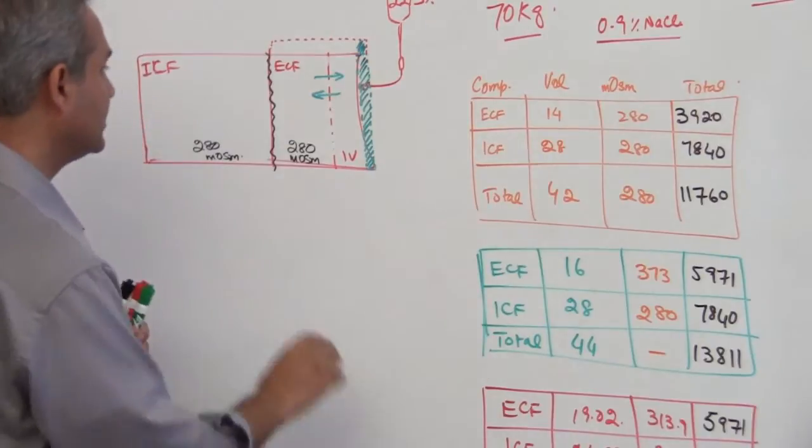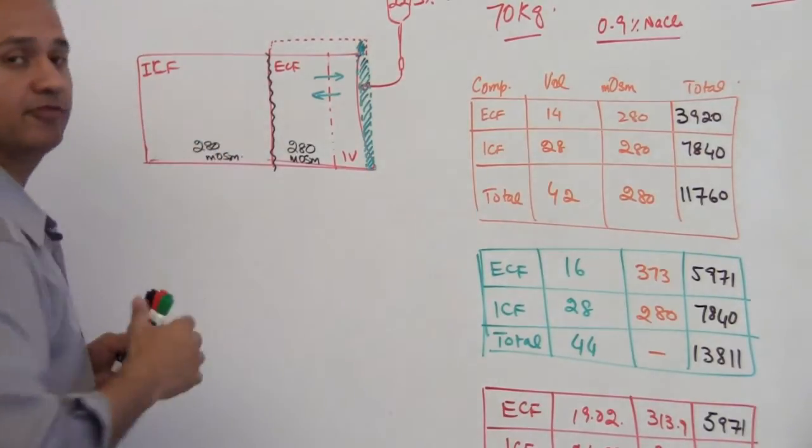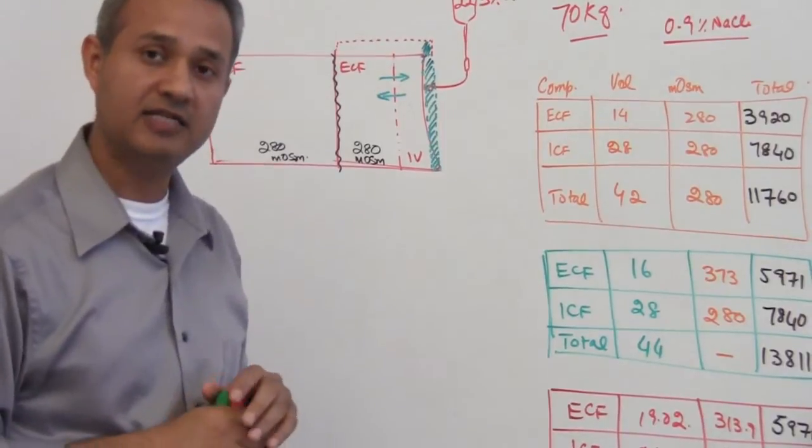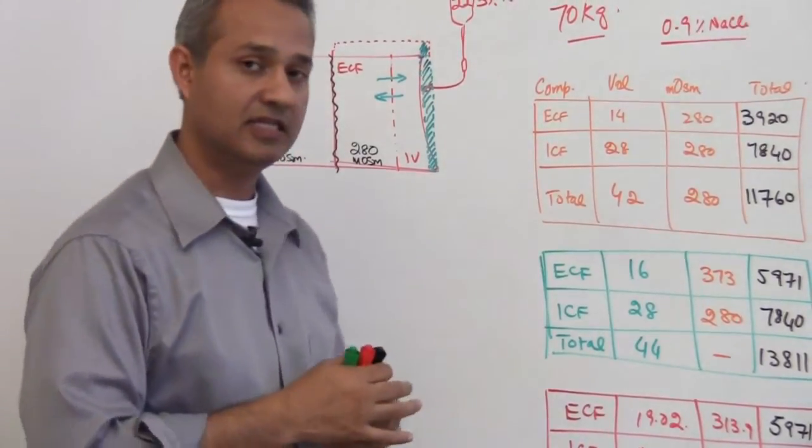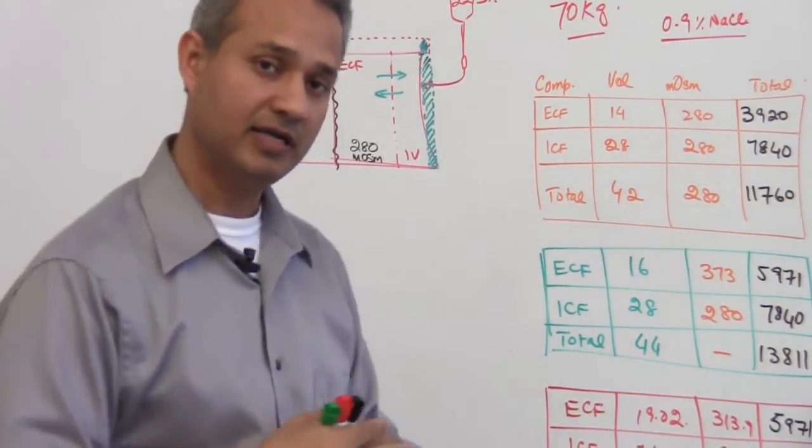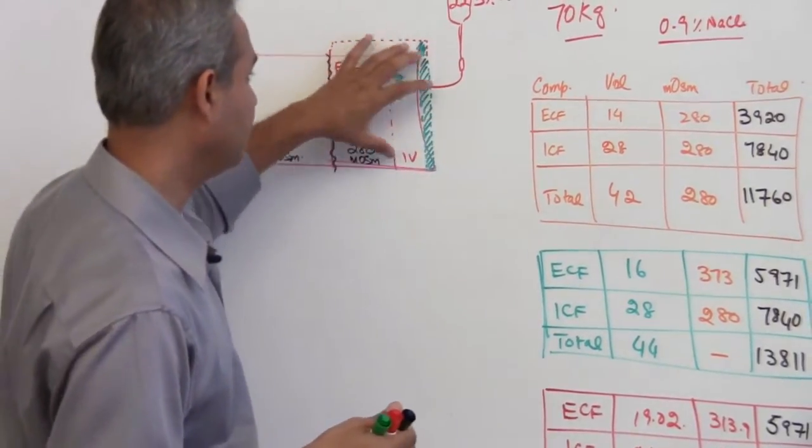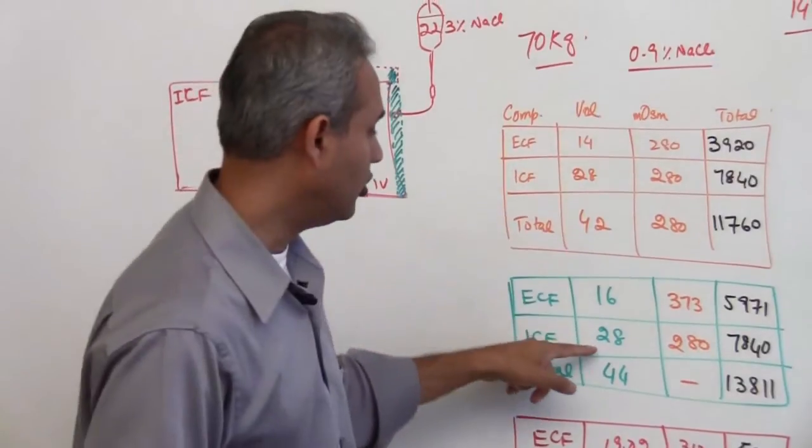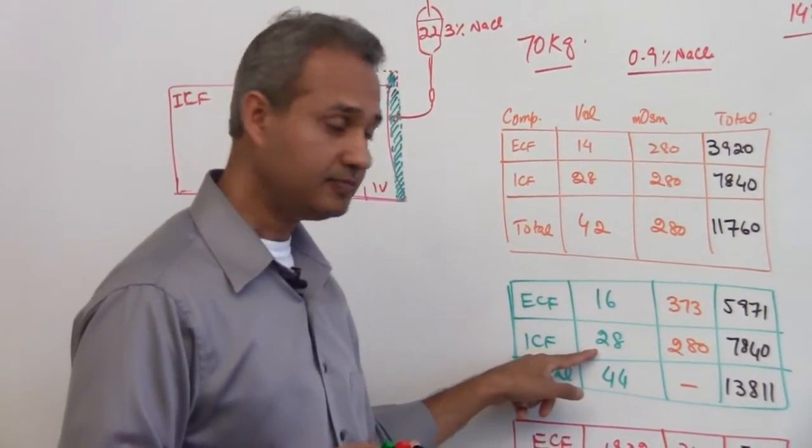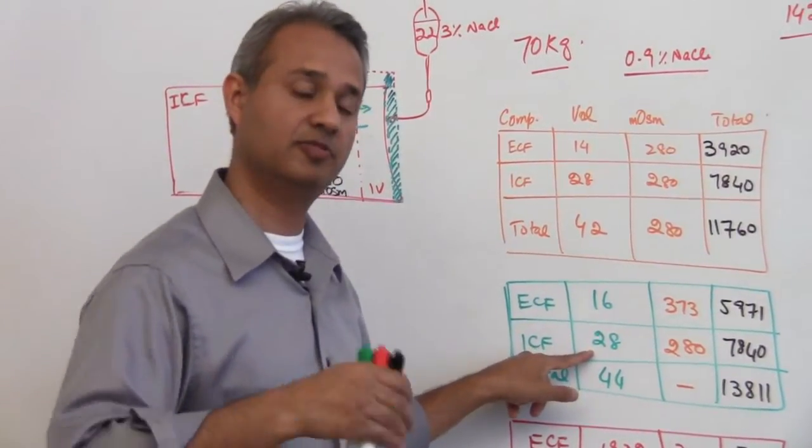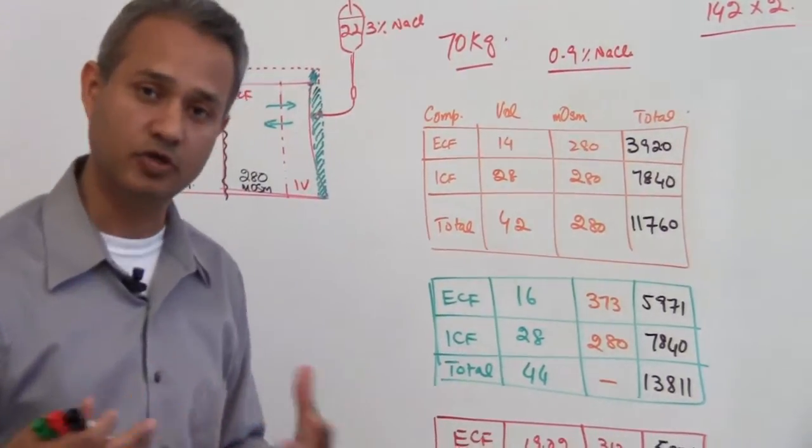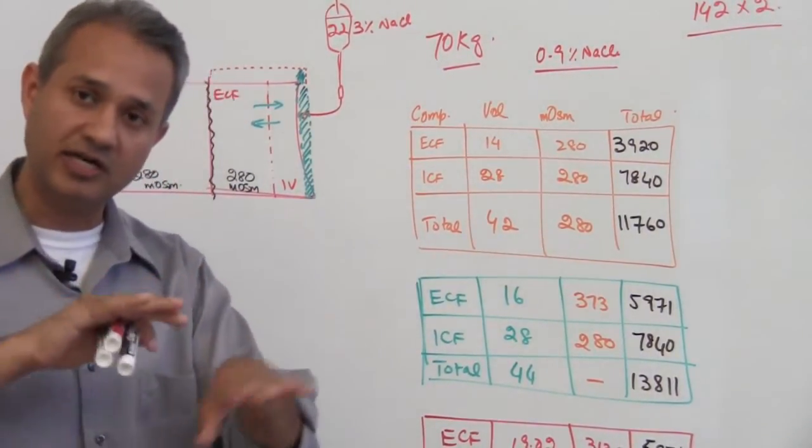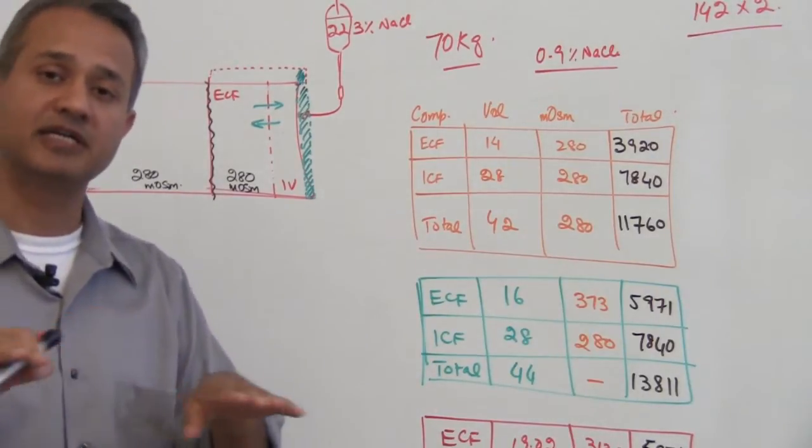Now the question is what happened to ICF? Immediately when we have added - let's say for our purposes there was no equilibrium going on till the time that we have infused this - intracellular fluid stayed almost the same. Of course, that is not really going to be the real case when you are doing it, because as you keep adding drop by drop, it is going to start equilibrating right away.